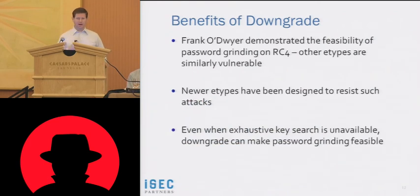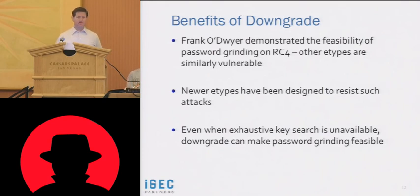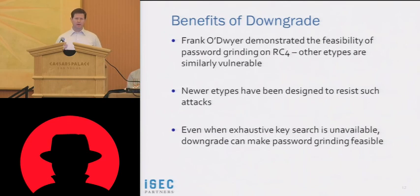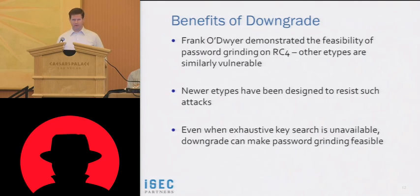We all know DES is bad — but is that the only thing that can go wrong? Another benefit of downgrade is that the latest E-types are more sophisticated in protecting against password-grinding attacks. By that I mean: take a big dictionary of words, derive keys, encrypt a timestamp, and verify whether the encrypted timestamp can be decrypted using a dictionary word to guess the user's password. Franco Dwyer, around 2002 to 2005, demonstrated efficient password-grinding attacks against RC4-HMAC-128, the E-type widely used in Windows. Even if you eliminate DES and use only E-types that can't be broken by exhaustive key-space search, you can downgrade to something that allows for efficient password grinding.